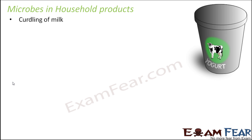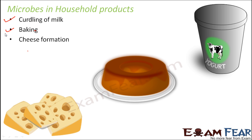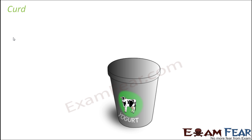One of them is curdling of milk — that means preparation of curd from milk. There is also baking; many items involve baking, for example bread and cake. In baking also, microbes play an important role. Cheese formation is another example — the formation of cheese also involves an important role of microbes. We will limit ourselves to these discussions and start with curd.